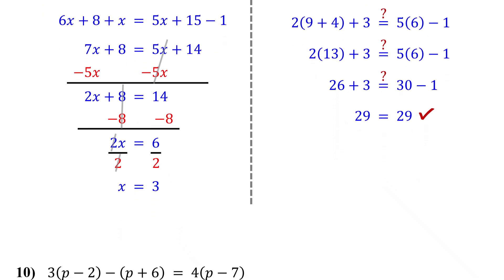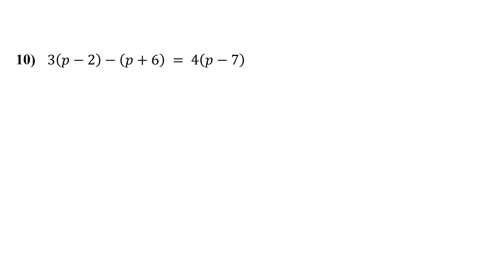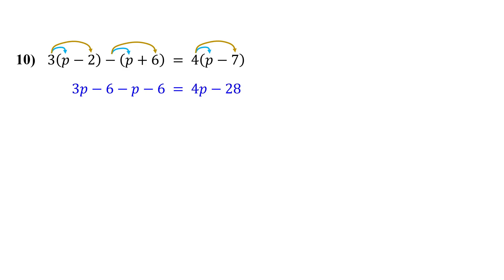One more to go, and this one brings it all together. Pause the video and give it a shot. First, remove all the parentheses using the distributive property. Start from the first parentheses on the left — distribute the 3 to both p and negative 2. 3 times p is 3p, and 3 times negative 2 is negative 6. Then remove the second parentheses on the left by distributing the negative sign to both p and 6. Remember, a negative sign in front of parentheses means multiplying by negative 1. So negative 1 times p is negative p, and negative 1 times 6 is negative 6. On the right, distribute the 4 to both p and negative 7. 4 times p is 4p, and 4 times negative 7 is negative 28.